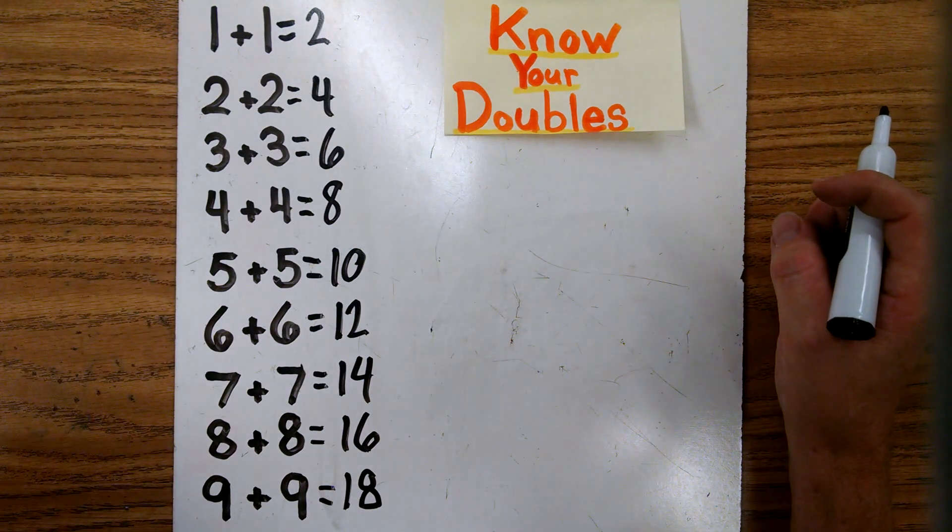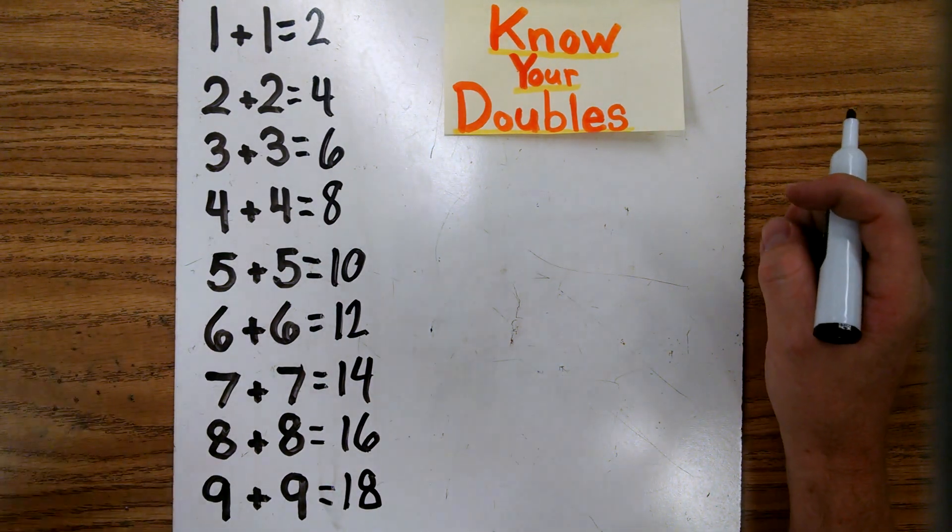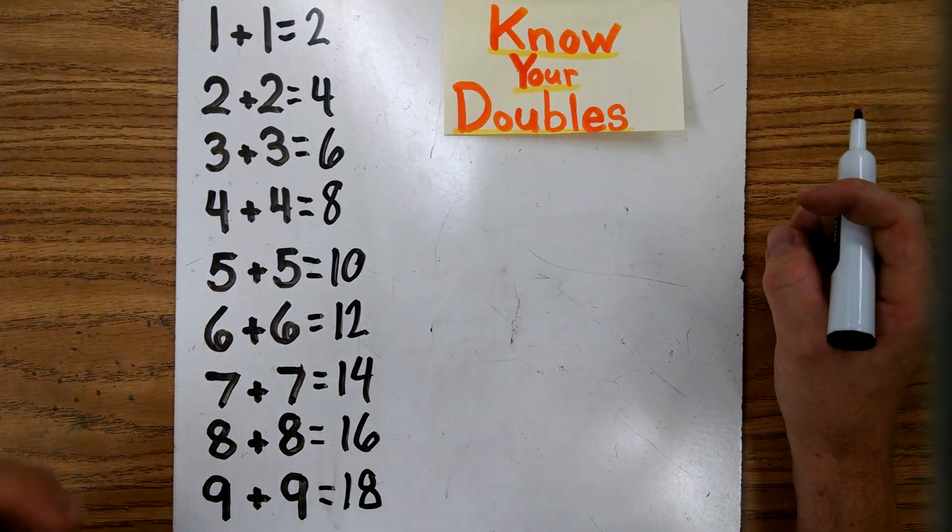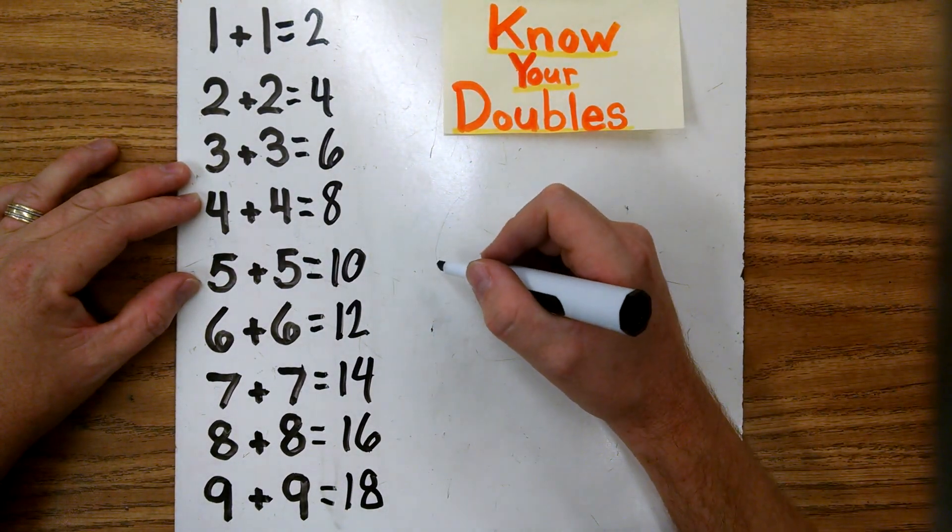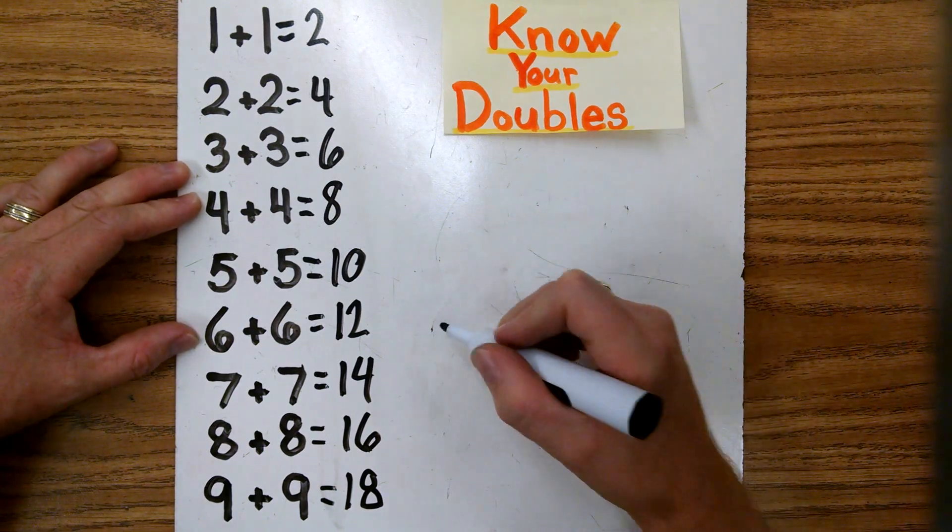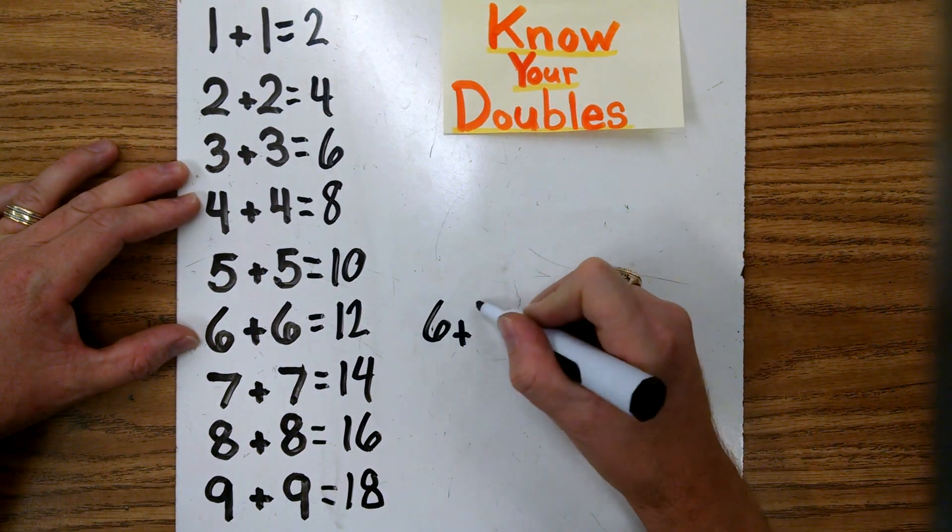One flashcard per problem, per double fact. And flash them until you're automatically remembering what it gives you. And then you'll be able to use them to easily add a near double. So an example of that would be 6 plus 7.